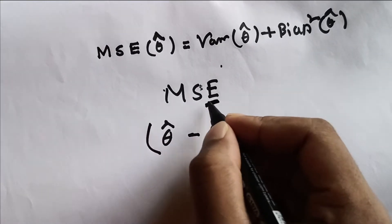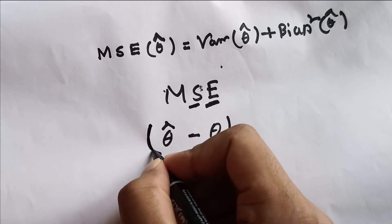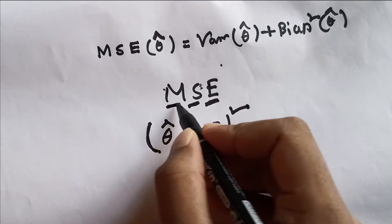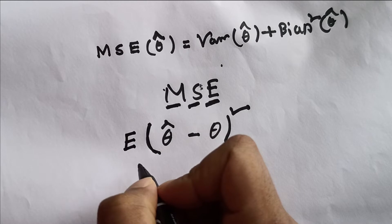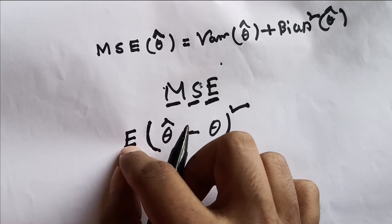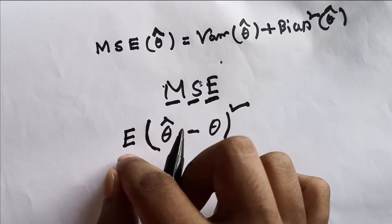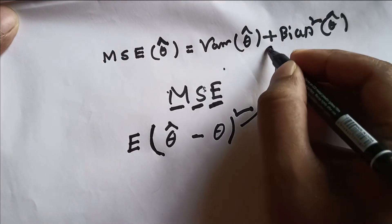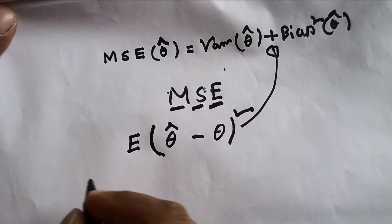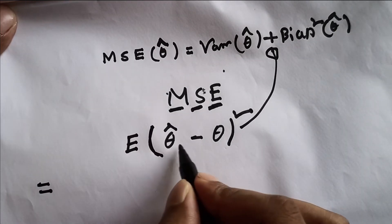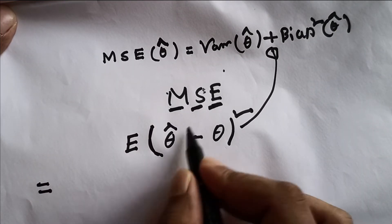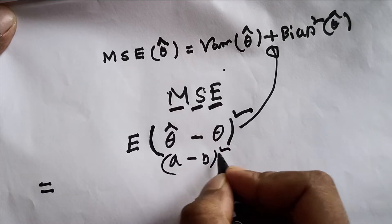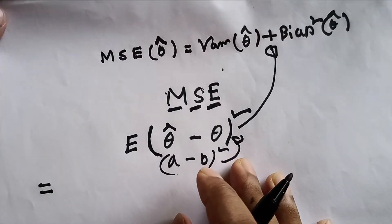Now we define the error. For defining the squared error, we just apply a square to that. For the mean, we take the expectation, and we know that in statistics we use expected value to generate the mean. So this is what the mean square error looks like. Now we will derive from this expression, applying the (a minus b) whole square formula.